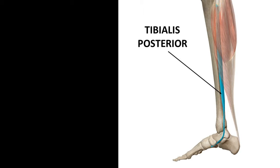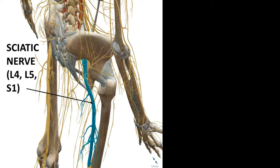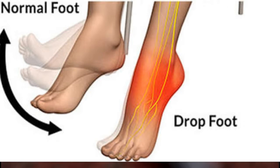The tibialis posterior muscle in the deep posterior compartment is also commonly involved in equinus contracture. This muscle attaches to the foot via the tibialis posterior tendon and is also involved in plantar flexion. These muscles are innervated by the tibial nerve, which is a branch of the sciatic nerve, with nerve roots at L4, L5 and S1. It is important to remember that weakness of the muscles in the anterior compartment causes dropped foot and not equinus contracture.